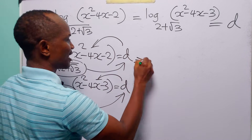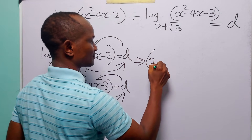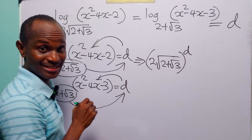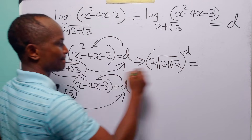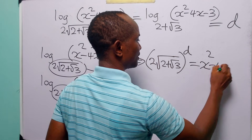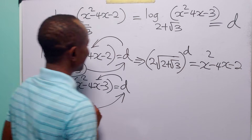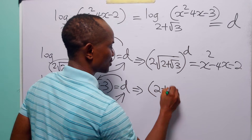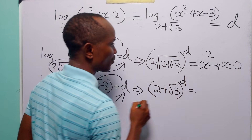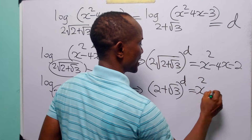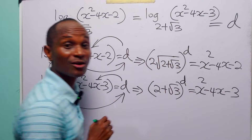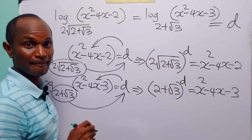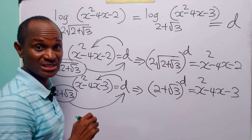So from the first equation we have that 2 times the square root of 2 plus root 3, all to the power d, is equal to x² minus 4x minus 2. And from the second equation we have that 2 plus root 3 to the power d is equal to x² minus 4x minus 3. Our task is to find the value of d, so let us subtract the second equation from the first.